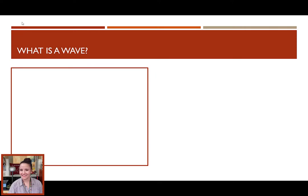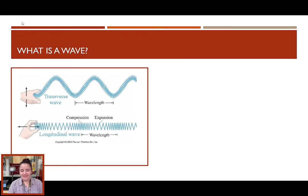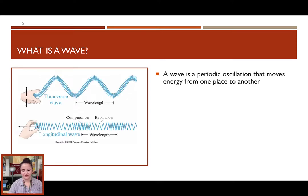So, what is a wave? We'll talk about two types of waves, but any wave is just a periodic oscillation that moves energy from one place to another. When we say oscillation, all we mean is moving back and forth.